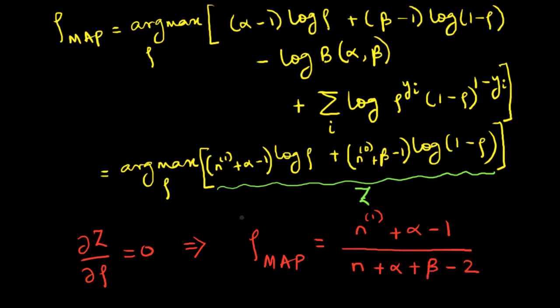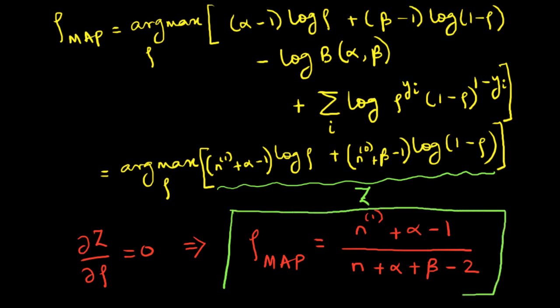We get that rho_MAP is equal to (n_1 + alpha - 1) divided by (n + alpha + beta - 2). You can see that the MAP estimate is somewhat different from the MLE estimate and depends on the choice of values of alpha and beta.